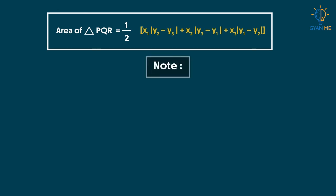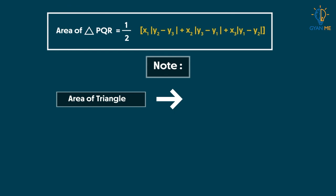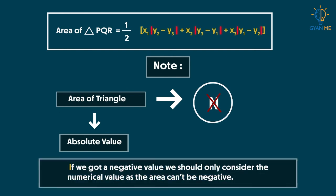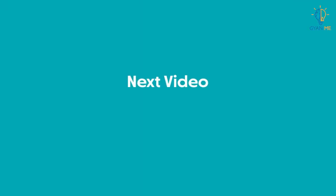Note, students: as the area of a triangle cannot be negative, we take the absolute value of the result. If we get a negative value, we should only consider the numerical value, as area cannot be negative. In our next video, we will take some examples which make use of this formula.